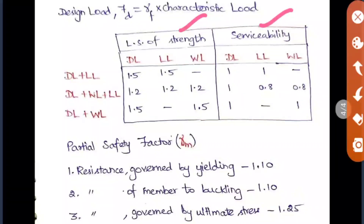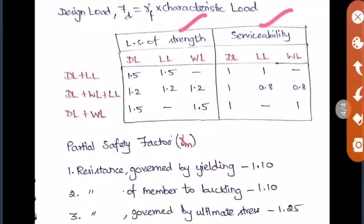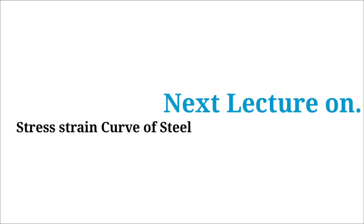The partial safety factor is also very important. For resistance governed by yielding and resistance of member to buckling, the partial safety factor is 1.1. For resistance governed by ultimate stress, a higher value of 1.25 is used. Thank you, and keep watching for the next lecture on the stress-strain curve of steel.